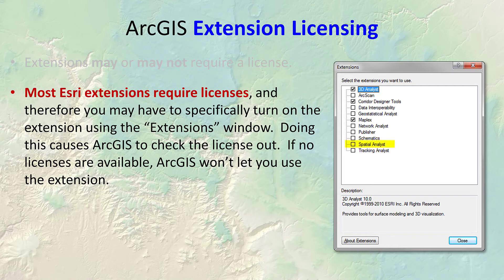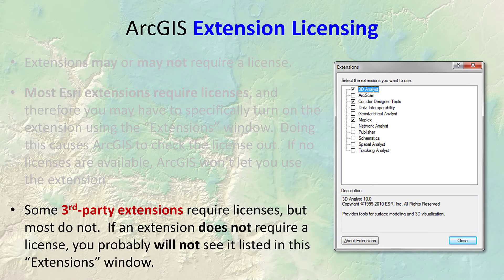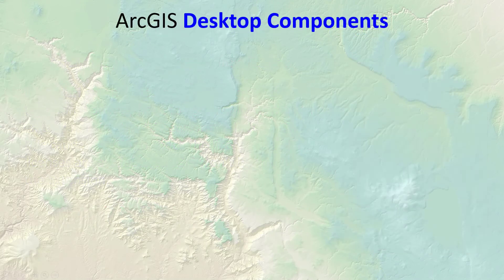We're going to use Spatial Analyst in some of this course, so you'll want to know how to turn that on when needed. Some third-party extensions require licenses but most don't, and if an extension doesn't require a license you're probably not going to see it in the Extensions window.